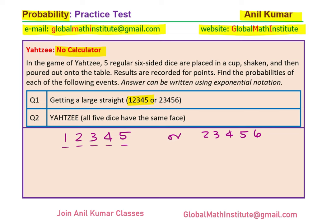Amongst the dice, there are five ways of getting the first number, four ways of getting the second of these 1, 2, 3, 4, 5, then three ways of getting the third, two ways of getting one of the two remaining, and then only one way of getting the last number. So these are all the cases, which is 5 factorial.